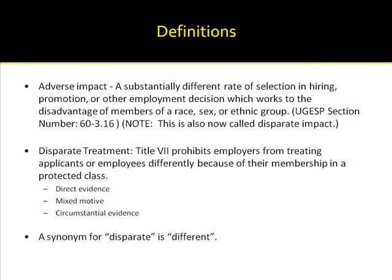Let's start by defining these two types of discrimination. Adverse Impact was defined in the Uniform Guidelines on Employee Selection Procedures as a substantially different rate of selection in hiring, promotion, or other employment decision which works to the disadvantage of members of a race, sex, or ethnic group. It is also now called Disparate Impact. It is important to note that the employment practice that may result in adverse impact may, on the face of it, look quite neutral.